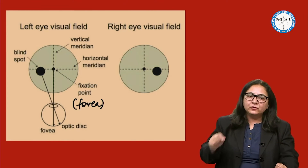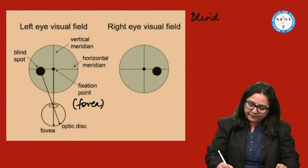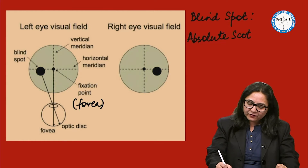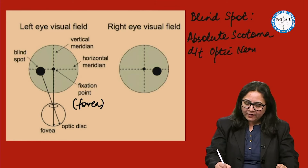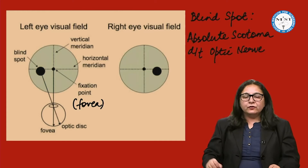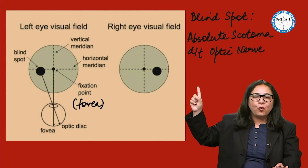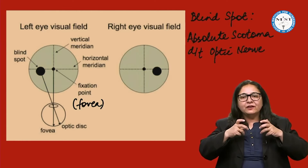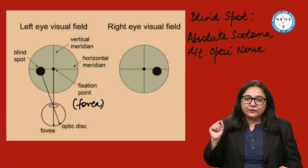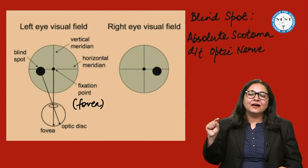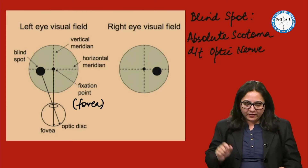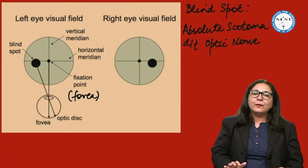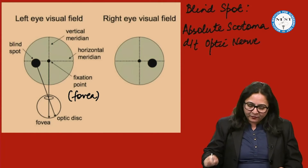The optic nerve is a spot of absolute scotoma, known as the blind spot. It is an absolute scotoma because the optic nerve does not have any photoreceptors — so even when light falls on the optic nerve, there are no photoreceptors for transduction. In our visual field, there is a blind spot due to the optic nerve; nothing is visible in that area. If partial visibility is present, that type of scotoma is known as a relative scotoma.